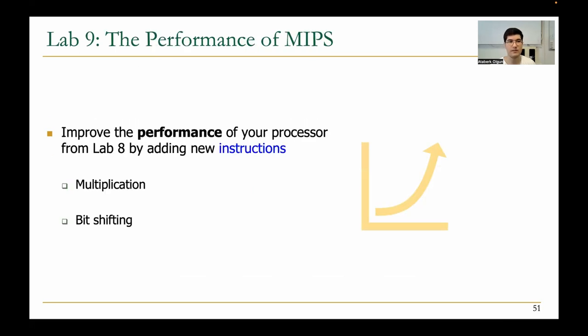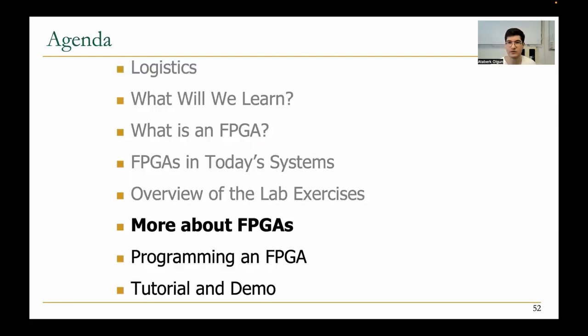In the last lab, lab nine, you will improve the performance of your processor from lab eight by adding new instructions such as multiplication and bit shifting. And that's about it for all of the labs.